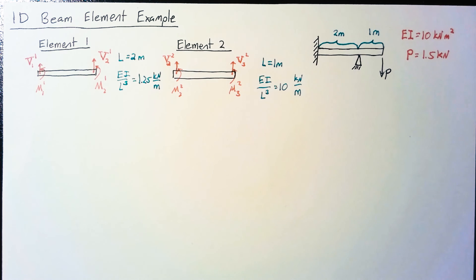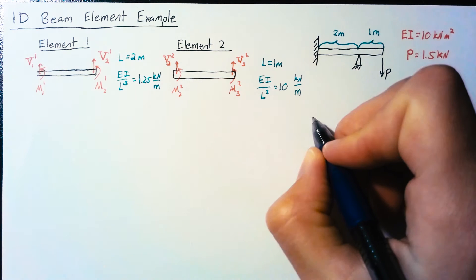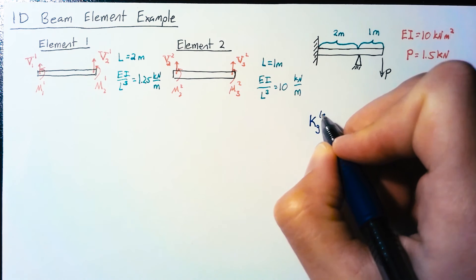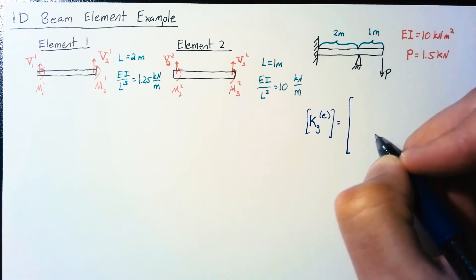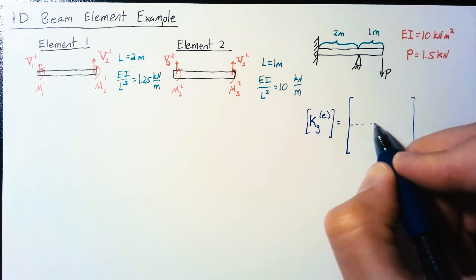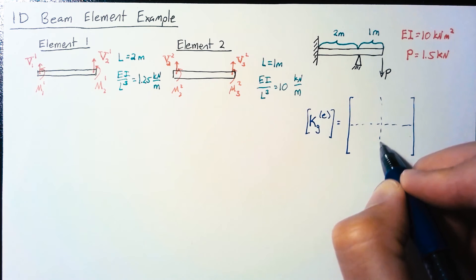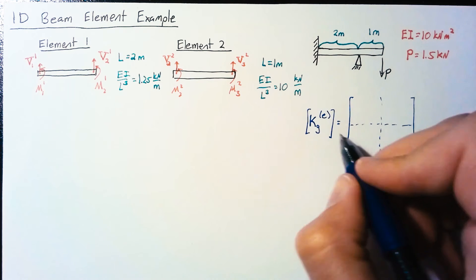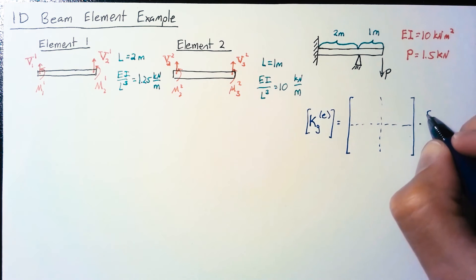Now our next step is to look at the element matrices. Let's start with our generic element matrix which can be subdivided into four submatrices, multiplying by EI over L³.